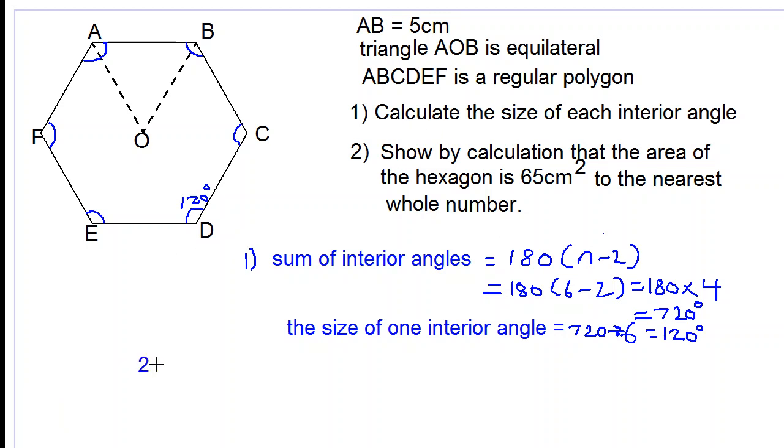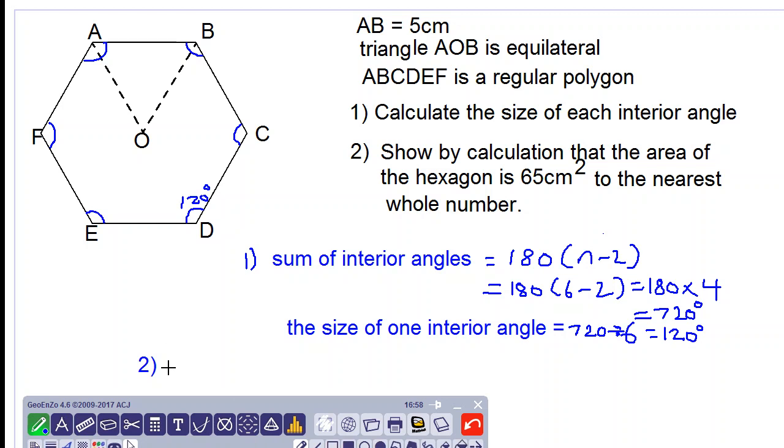Let's look at number two. We have to show by calculation that the area of the hexagon is 65 cm² to the nearest whole number. So first let's find the area of triangle AOB.